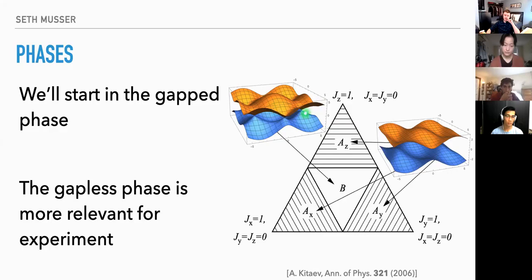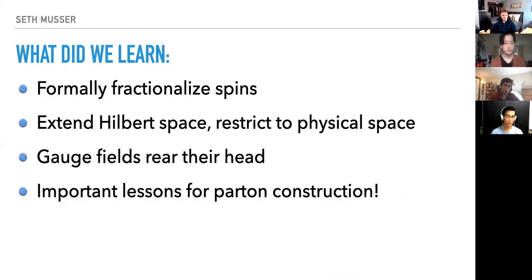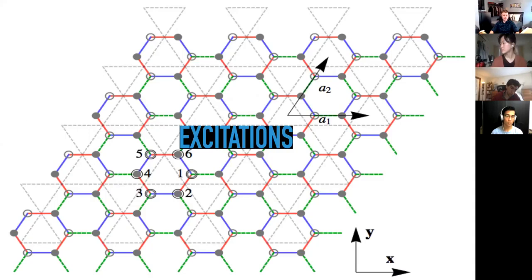In the ground state the bands touch at zero — the ground state has everything filled below zero and we can excite Majoranas above that. In the gapped phase there's a gap to exciting Majoranas. In summary, to solve the Kitaev model we formally fractionalized the spins, extended our Hilbert space and restricted to physical space, and found that gauge fields appeared. All of this will be important when we consider parton construction.